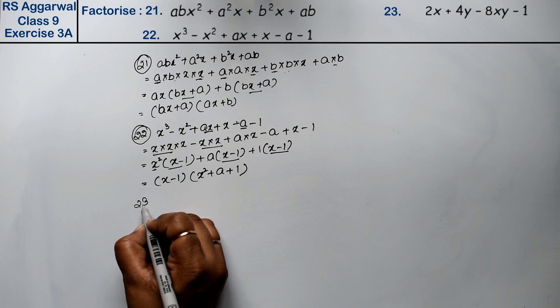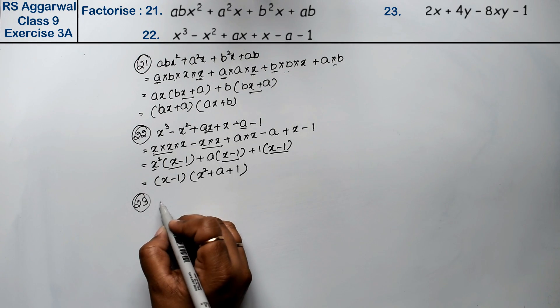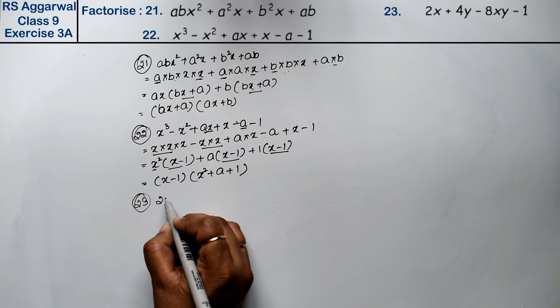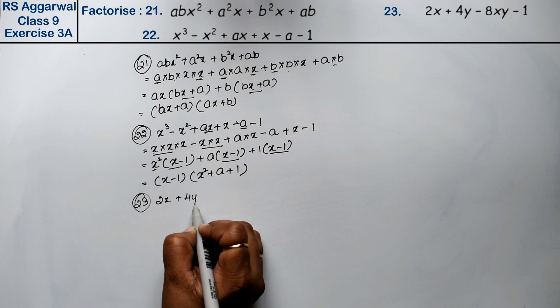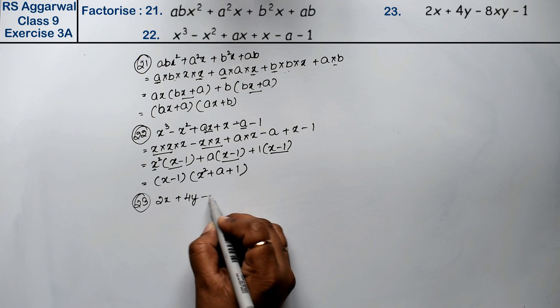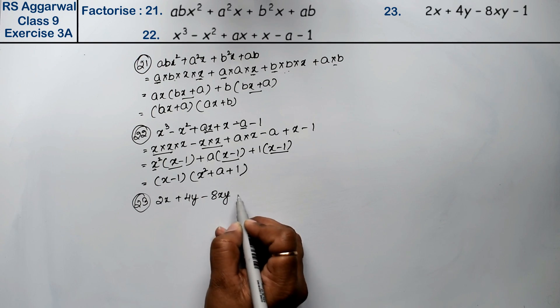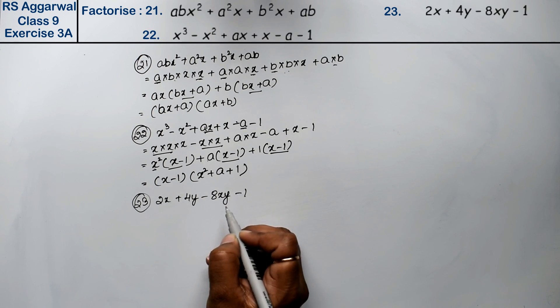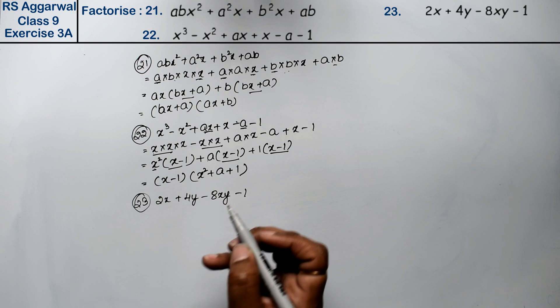Let's do question number 23. Question number 23 is 2x plus 4y minus 8xy minus 1.